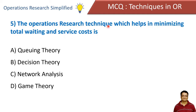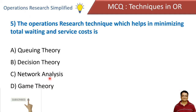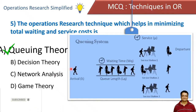The operation research technique which helps in minimizing the total waiting and service cost is: queuing theory, decision theory, network analysis, and game theory. Correct answer is queuing theory. In queuing theory, we have various service stations and customers visiting those service stations to get service. The aim is to minimize the waiting time and to reduce the service cost.